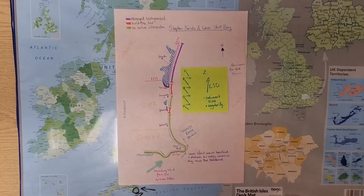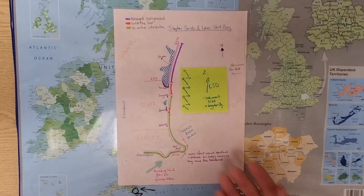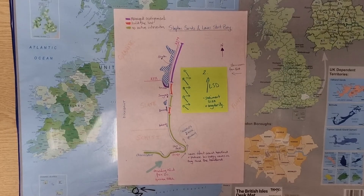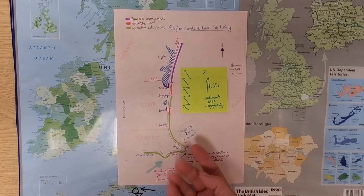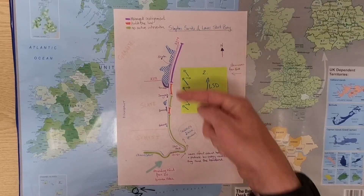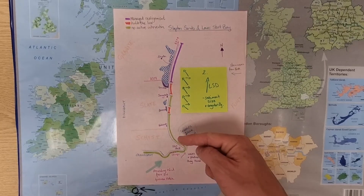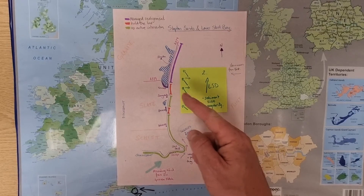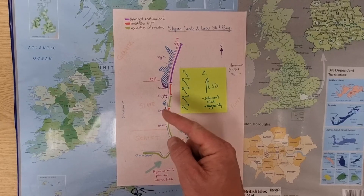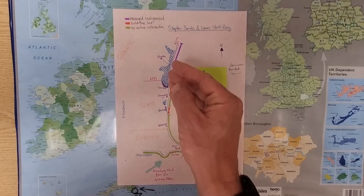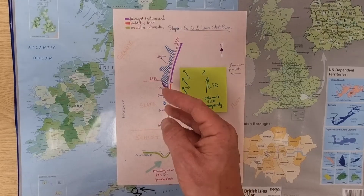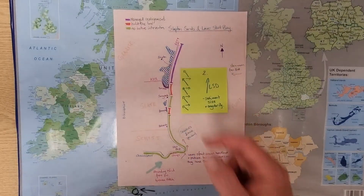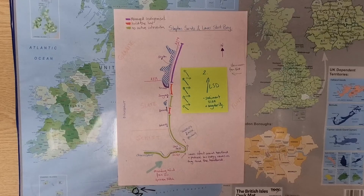Longshore drift on this piece of coastline moves from south to north — the sediment moves up towards the north in general. This leads us to think about possible investigations: does the sediment moving north produce wider beaches up here compared to narrower beaches down here? Does the nature of the sediment change as we move along? Does it get more rounded? Because of the zigzag pattern of longshore drift, the sediment takes a long time to move up there, and it's subject to attrition — the rocks bashing together — so they may get smaller and more rounded.